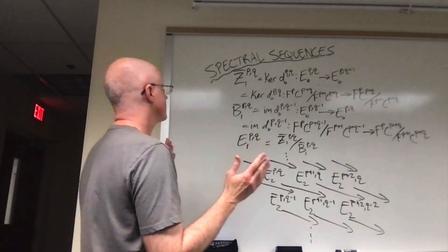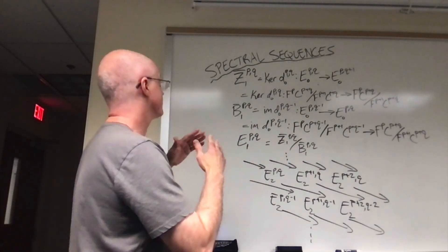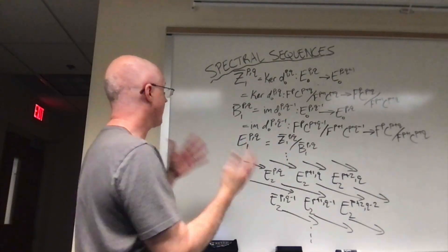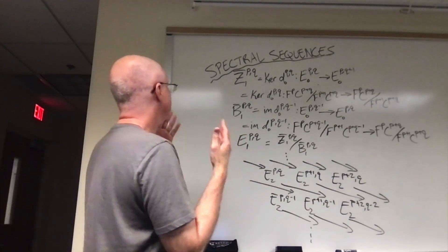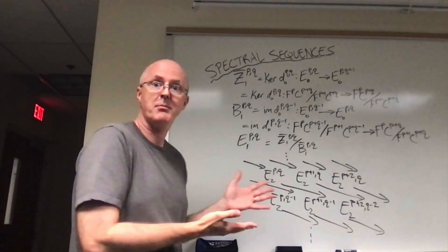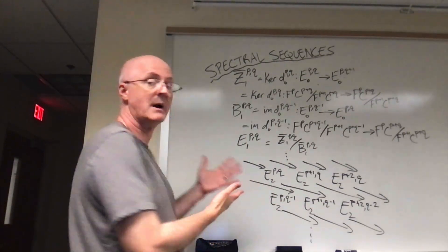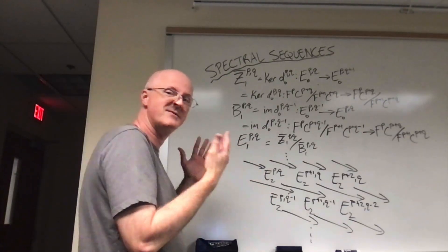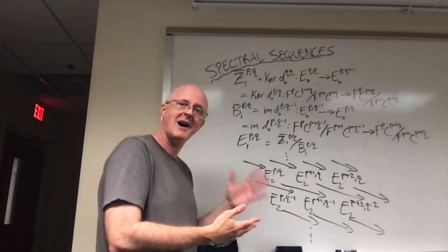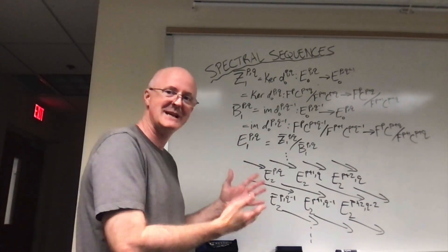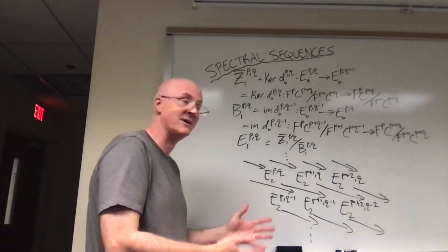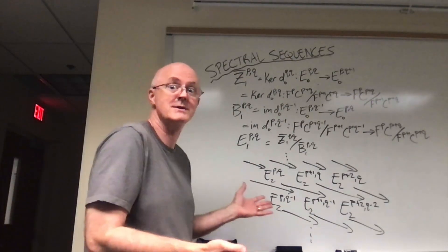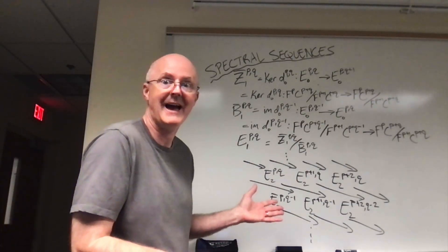All sorts of letters everywhere, all sorts of superscripts and subscripts and arrows. The letters often represent groups. The arrows represent homomorphisms. This filled the board of my spectral sequence class pretty much every class period, and I pretty much didn't know what was going on beyond that.